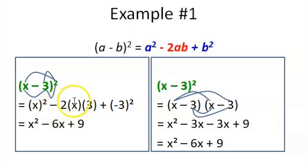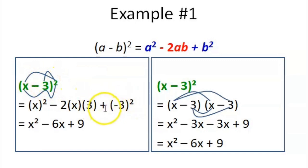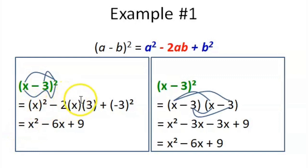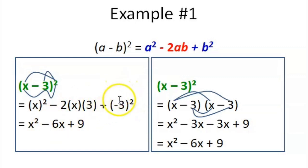That gives us negative 2 times x times 3. Then for the last term, we have (negative 3) squared, which is plus (negative 3) squared. Simplifying: we have x squared, then 2 times x times 3 gives us 6x, and (negative 3) squared means negative 3 times negative 3, so the result is positive 9. The final answer is x squared minus 6x plus 9.